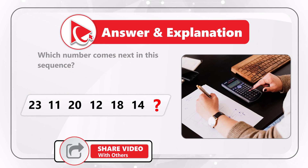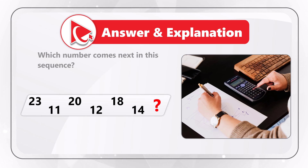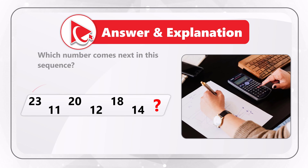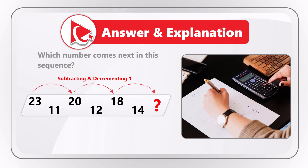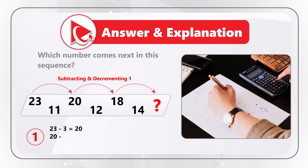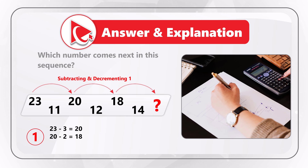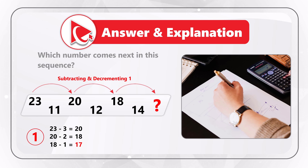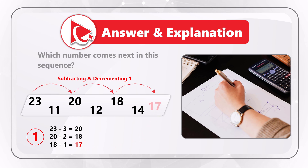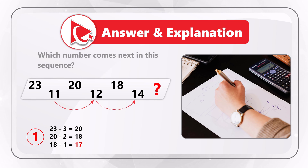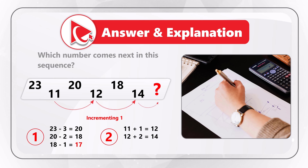Let's look closely at both patterns. The numbers 23, 20, 18, and 17 represent the first pattern, where the next number is calculated by subtracting a decrementing number from the previous: 23 minus 3 equals 20, 20 minus 2 equals 18, and 18 minus 1 equals 17. The even-positioned numbers 11, 12, 14, and the missing number use the opposite pattern — incrementing: 11 plus 1 equals 12, then 12 plus 2 equals 14, and the missing number is 14 plus 3 equals 17. So the correct answer here is choice A, 17.